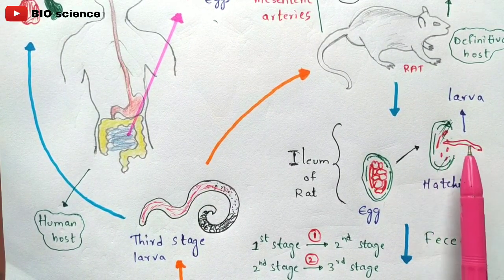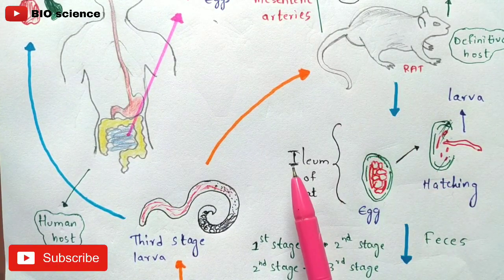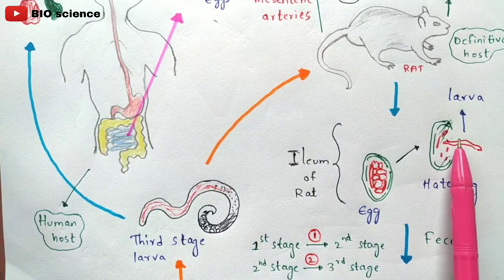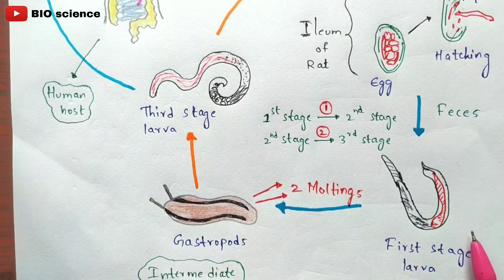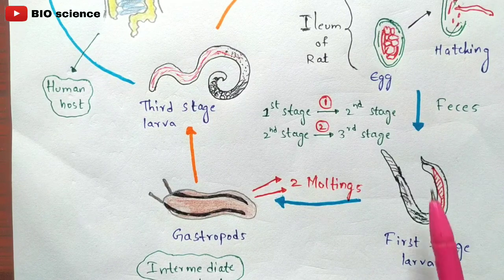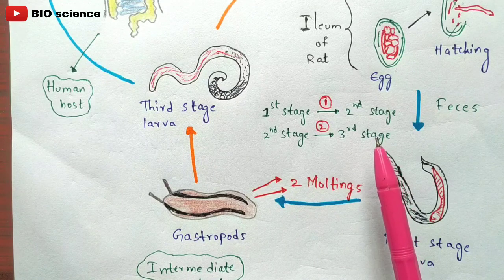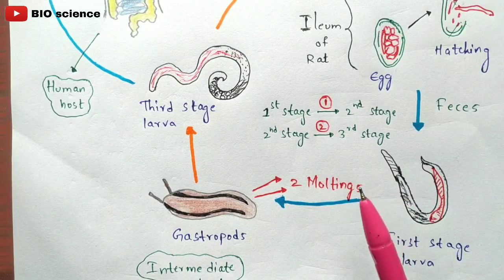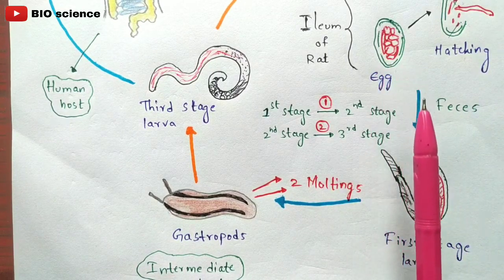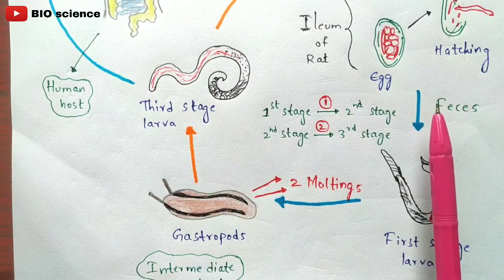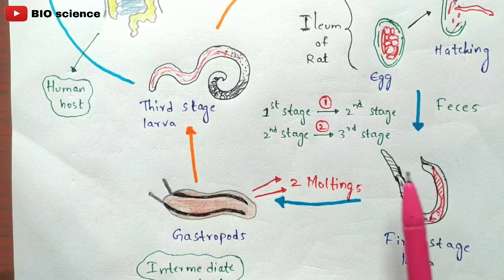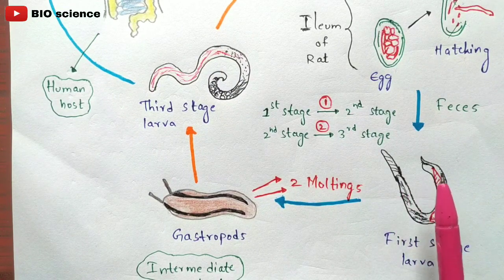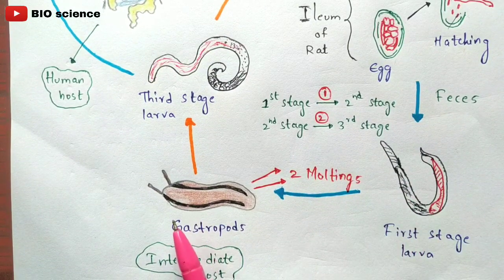The first stage larvae are then excreted along with the fecal material from the rat. Many eggs laid by the adult worm population all undergo hatching, producing many first stage larvae. These first stage larvae are released along with the fecal material — they are immature in form, not adult stage.